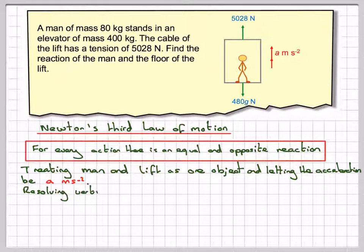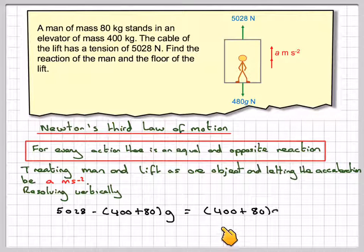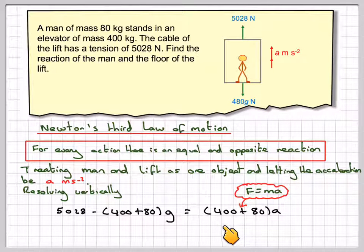Resolving vertically, we have 5028 minus 400 plus 80, that's the mass of the lift and the mass of the man, times G, is equal to MA. So the total mass is 400 plus 80 times A.